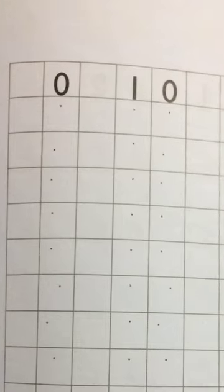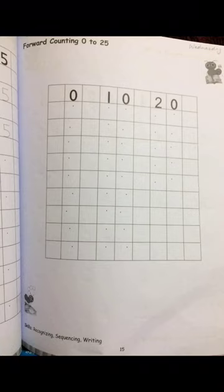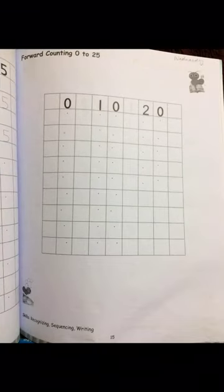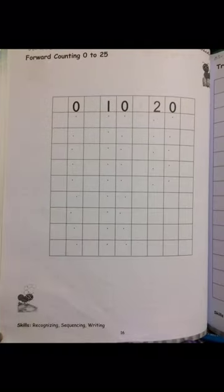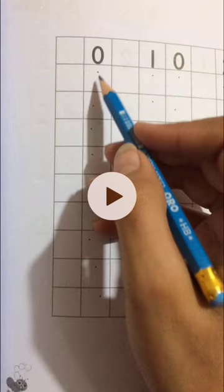The first number is 0. You have to start from 0. We have to count. If it is 0, then which number is next? Then 1, then 3, 4, 5. We have to count and write. Today we will do page number 15 and 16. We have to do forward counting from 0 to 25.